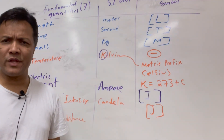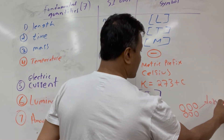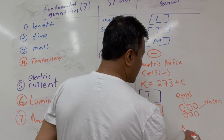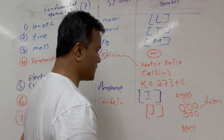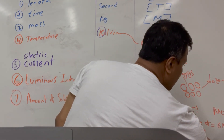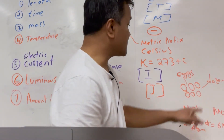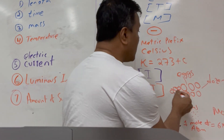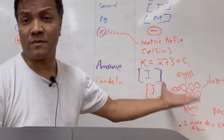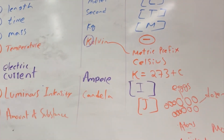Number seven is amount of substance. When you want to count big things, you use a dozen — 12 items. When you want to count very small things like atoms, you use the mole. One mole of atoms equals 6 times 10 to the 23 atoms. So just as a dozen means 12, one mole means 6 times 10 to the 23. That concludes our overview of SI units.